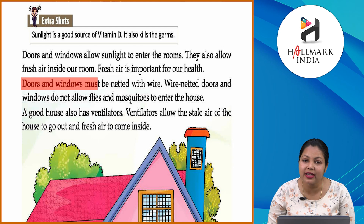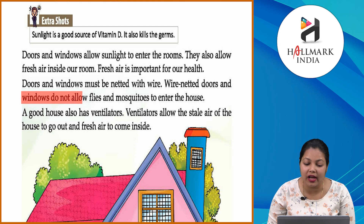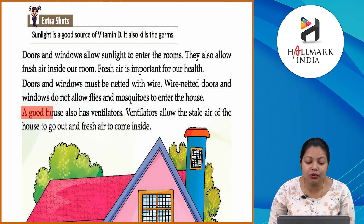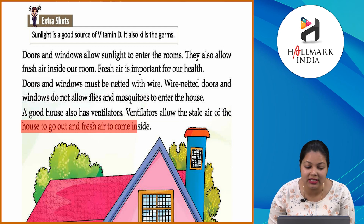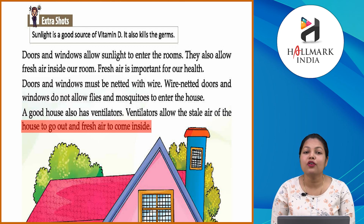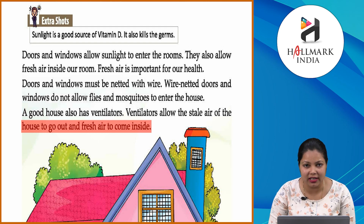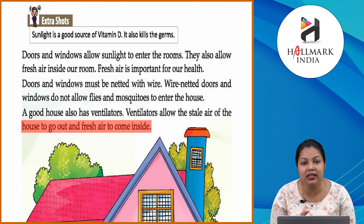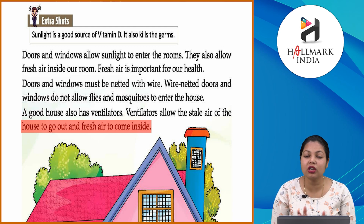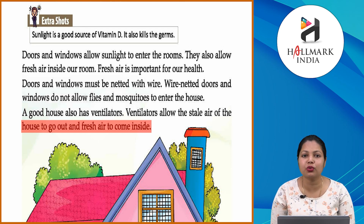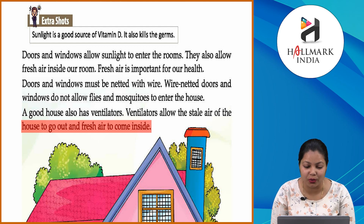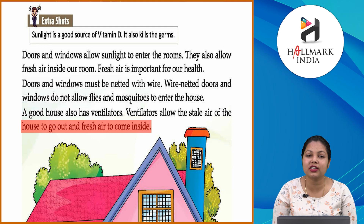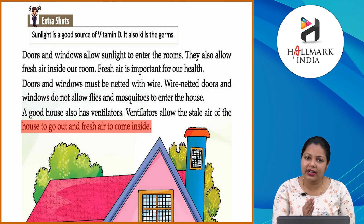Doors and windows must be netted with wire. Wire-netted doors and windows do not allow flies and mosquitoes to enter the house. A good house also has ventilators — ventilators allow the stale air of the house to go out and fresh air to come inside. घर की doors और windows properly net से netted होनी चाहिए जो flies और mosquitoes को रोकती हैं। Ventilators के through घर की stale air बाहर जाती है और fresh air अंदर आती है।